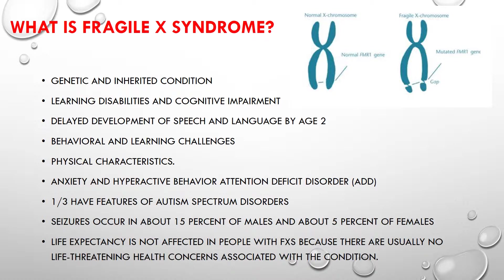Males are more impacted than females, and Fragile X children might experience anxiety, attention deficit disorder, or hyperactive behavior. Fragile X is the single largest known genetic cause of autism spectrum disorder. It can also have other comorbidities, including ADHD, seizures, and anxiety.